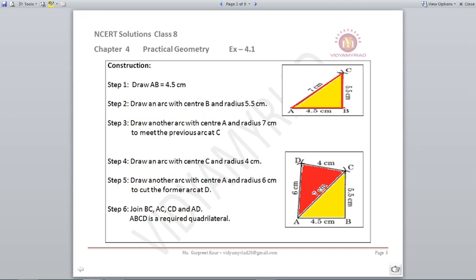Let's follow that. Now first of all what you will do is you will draw a line AB 4.5 cm with the help of a scale. Mark the point A and B. Now with the help of a compass what you will do is put your compass point at B and mark 5.5 cm as an arc.